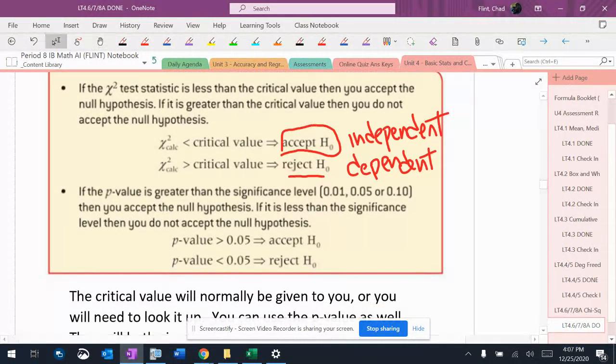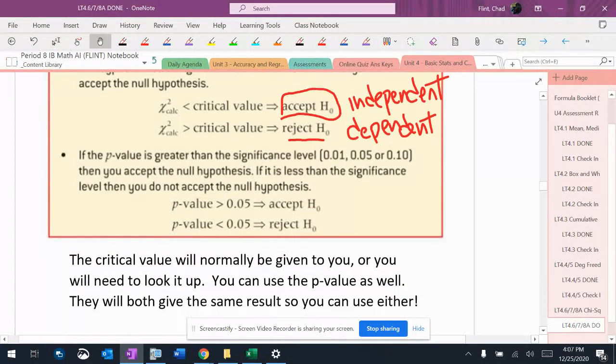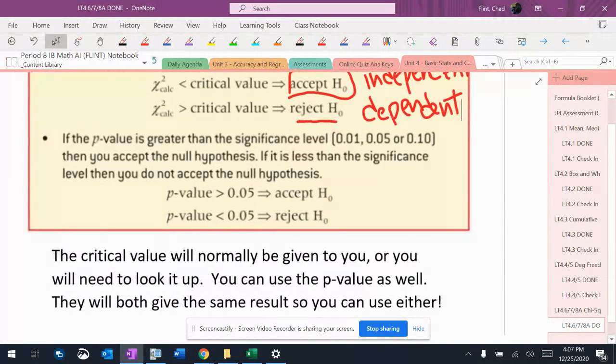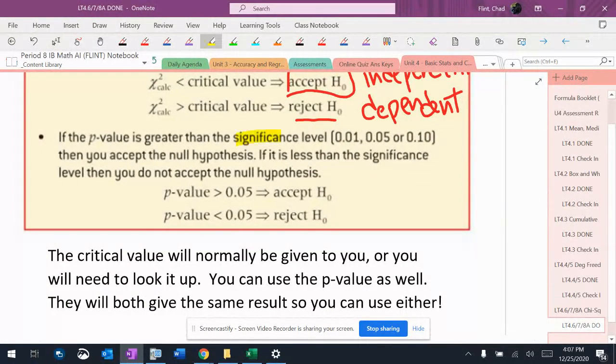Now, you're not always going to have the critical value. Obviously, in a real-life situation, you can always look the critical value up, but when you're taking a test, sometimes you don't have it. So you will have just the p-value. You'll always have a significance level, and you can compare the p-value to the significance level.